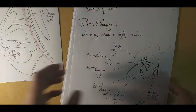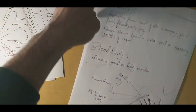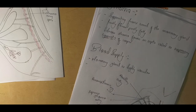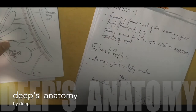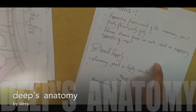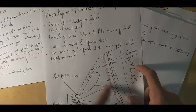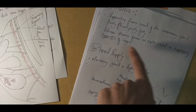The stroma is the supporting framework of the mammary gland. The fibrous stroma forms septa called the suspensory ligaments of Cooper - named after their discoverer - which are part of the structural framework of the mammary gland.